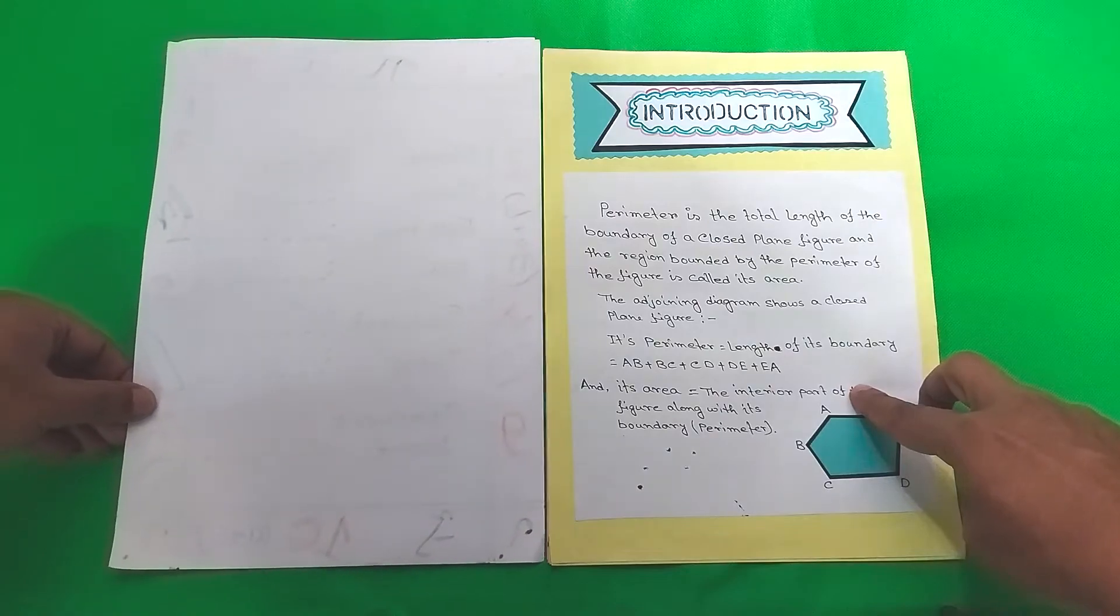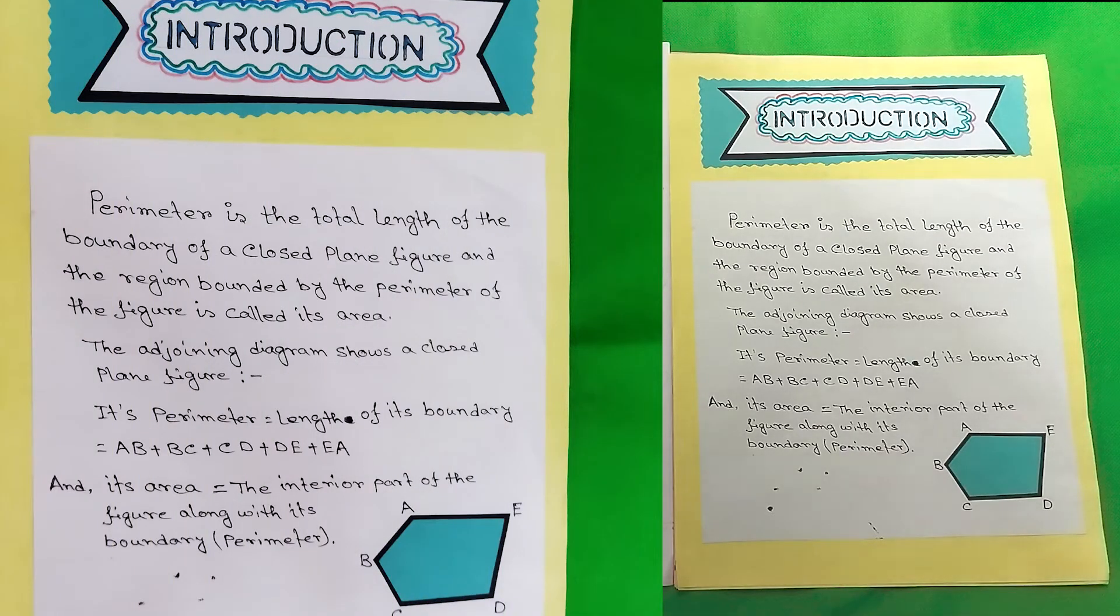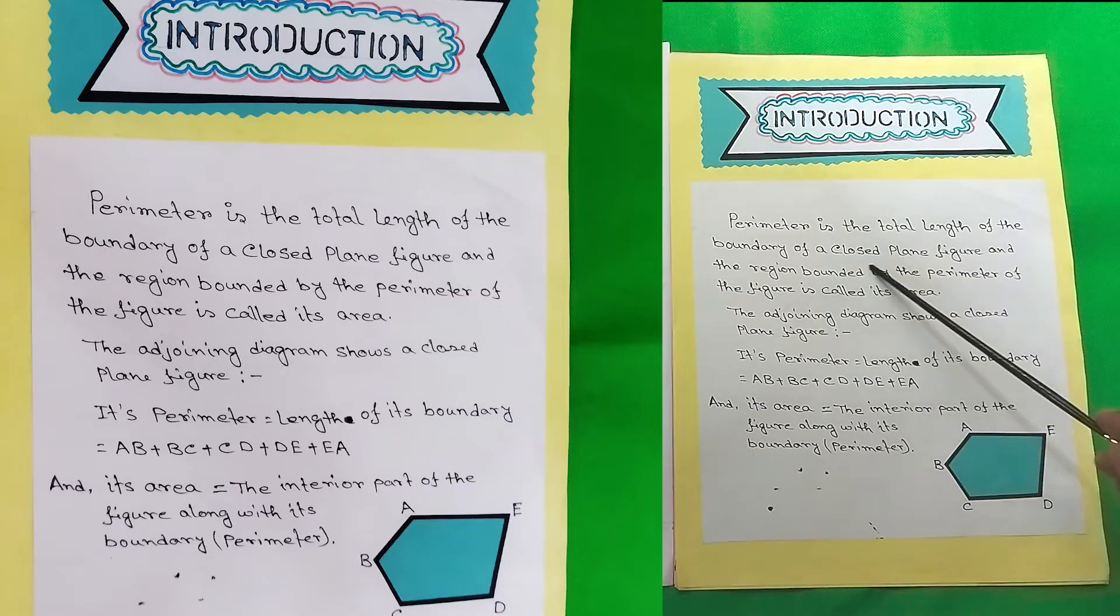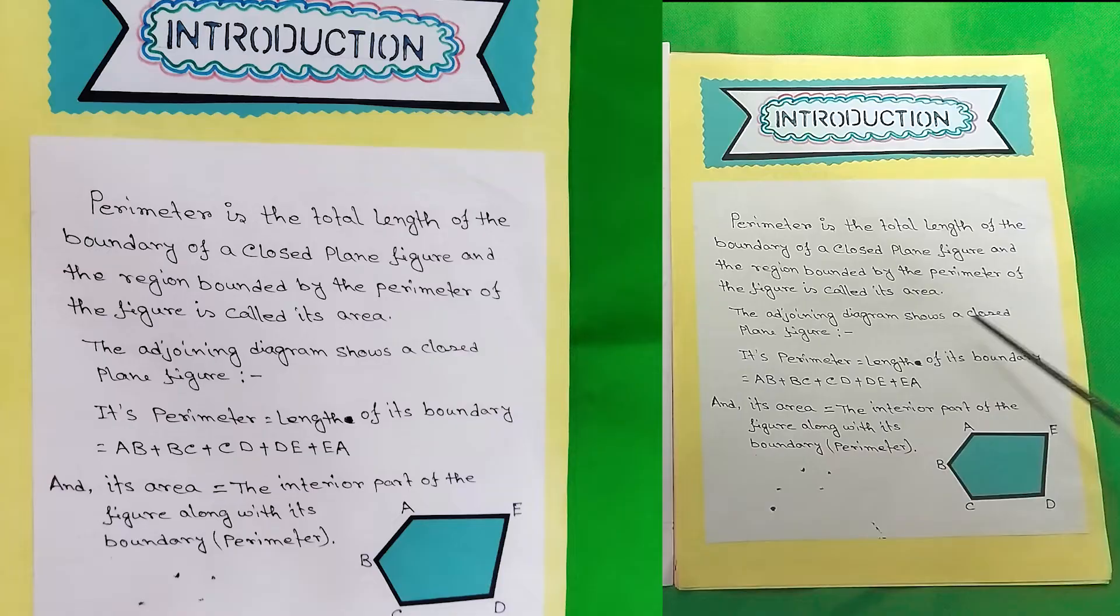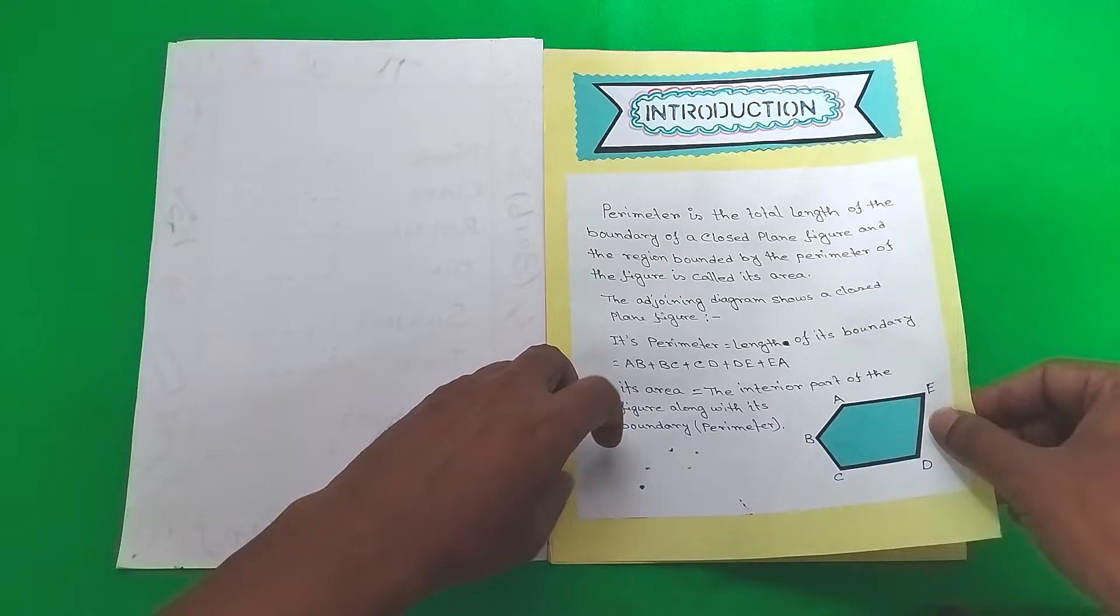So now is the introduction. The perimeter is the total length of the boundary of a closed plane figure and the region bounded by the perimeter of the figure is called its area. The adjoining diagram shows a closed plane figure. Its perimeter length of its boundary equals AB plus BC plus CD plus DE plus EA and its area equals the interior part of the figure along with its boundary perimeter.